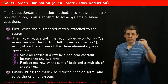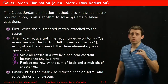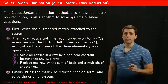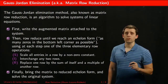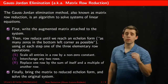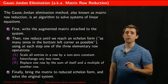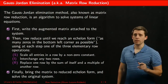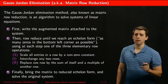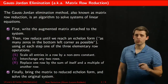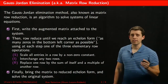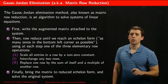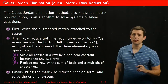Once we've reached what's called the echelon form, we then find the reduced echelon form that helps decide what the solutions to the original system are, and whether there are infinitely many or only finitely many solutions.